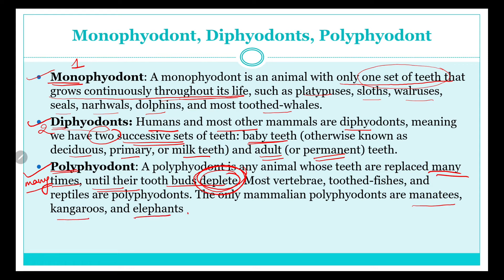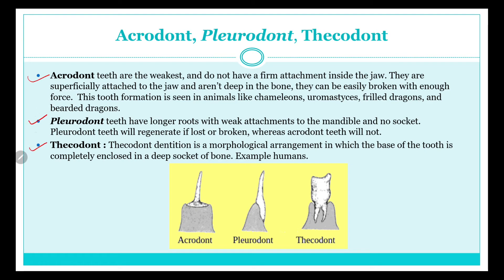Acrodont teeth are the weakest and do not have a firm attachment inside the jaw. As you can see in this diagram, acrodont teeth are just superficially attached on the surface of the jaw — not embedded inside. There is no firm attachment; they are just touching the surface, and they can easily be broken because they are not embedded.